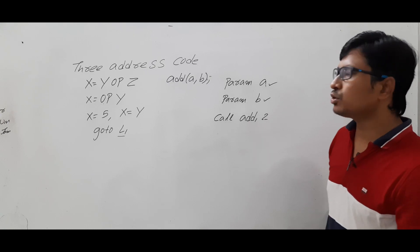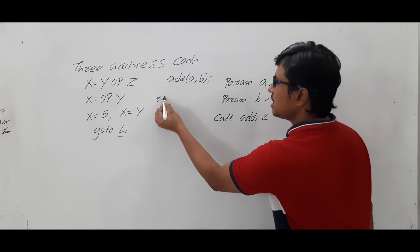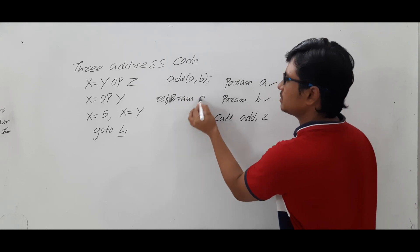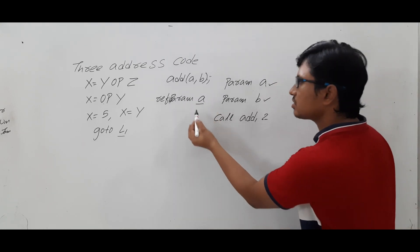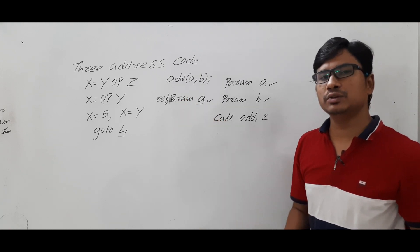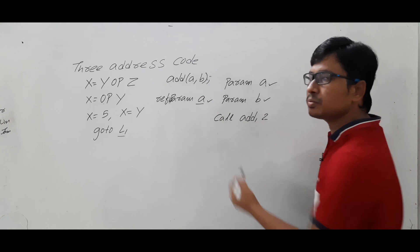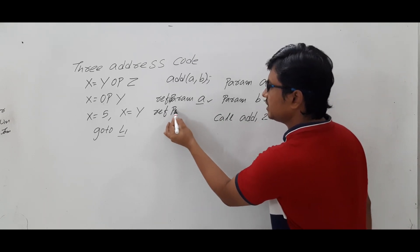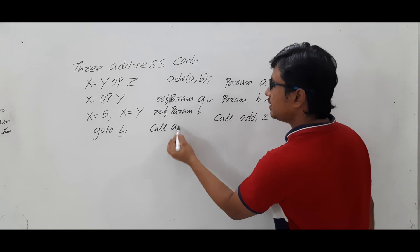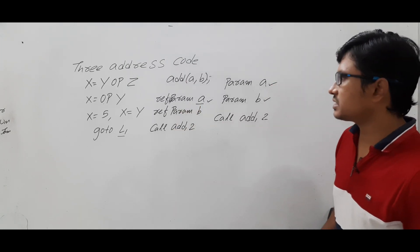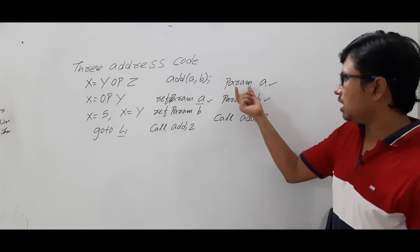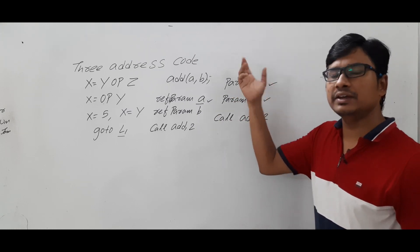If you want to pass the address of a parameter rather than its value, you use ref_param. So to pass the address of a, you write ref_param a — the address of a is pushed onto the stack. Similarly, ref_param b pushes the address of b. Then you call the function: call add, 2. So ref_param pushes the address of the parameter to the stack, while param pushes the value.